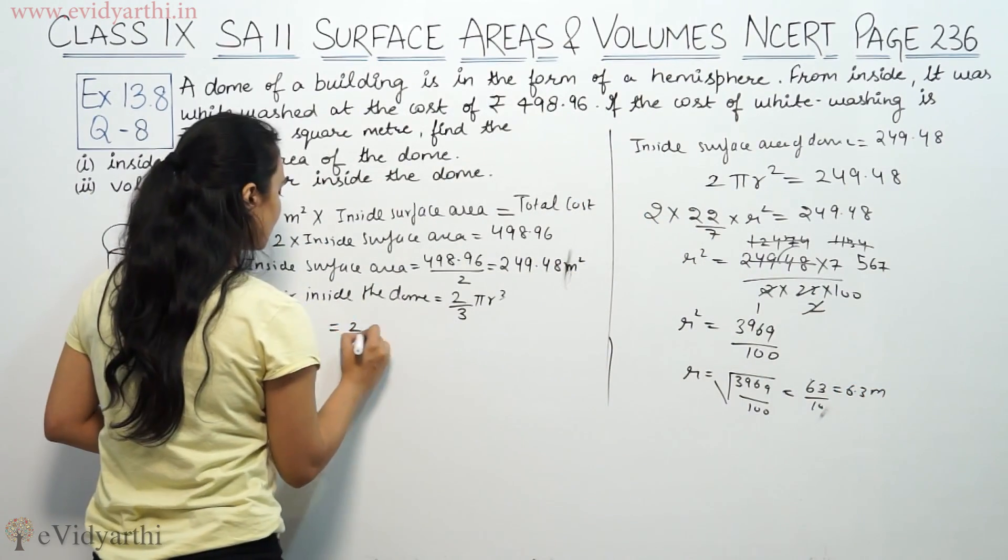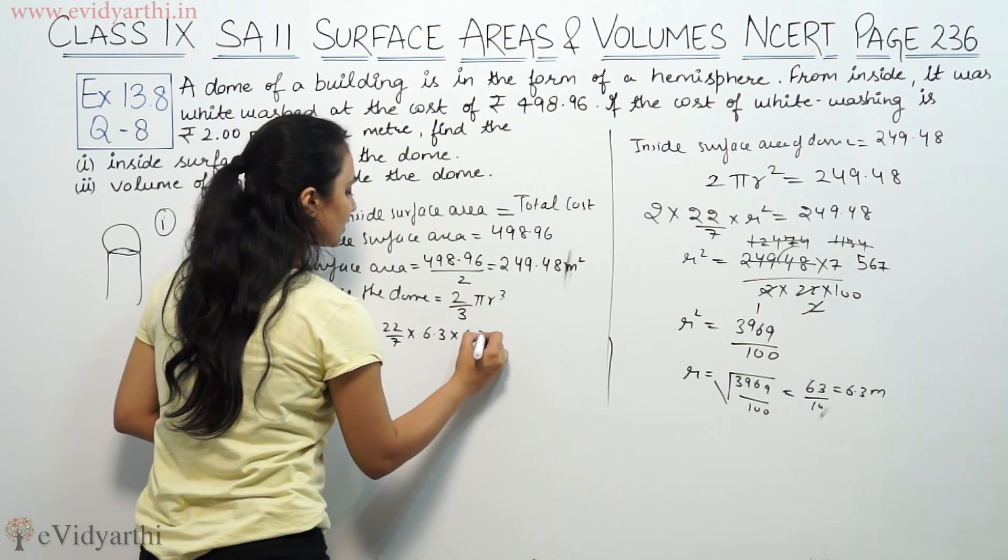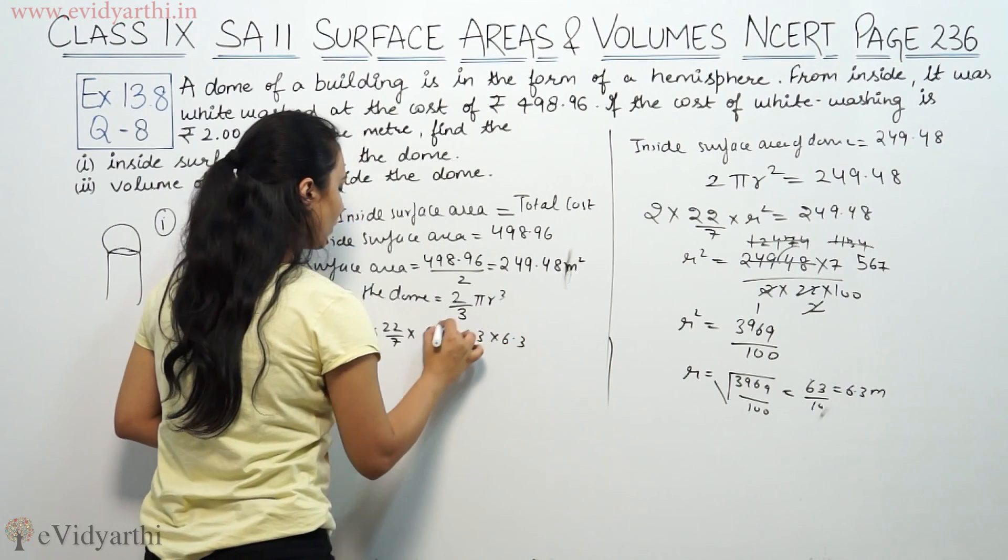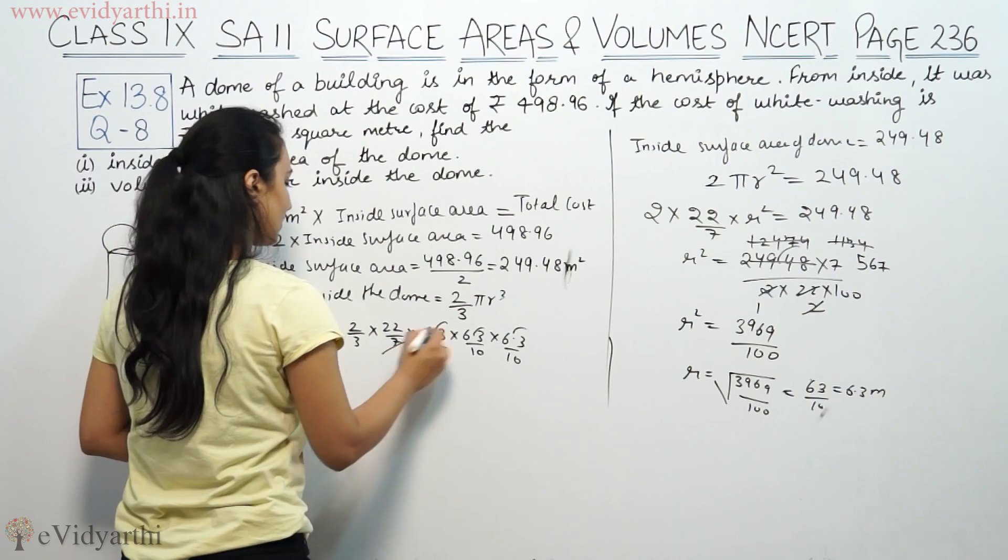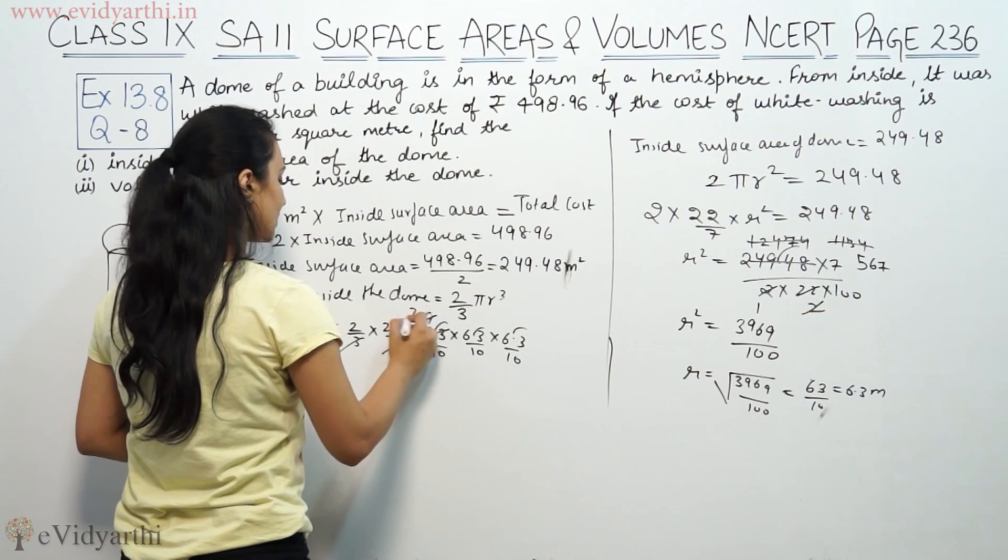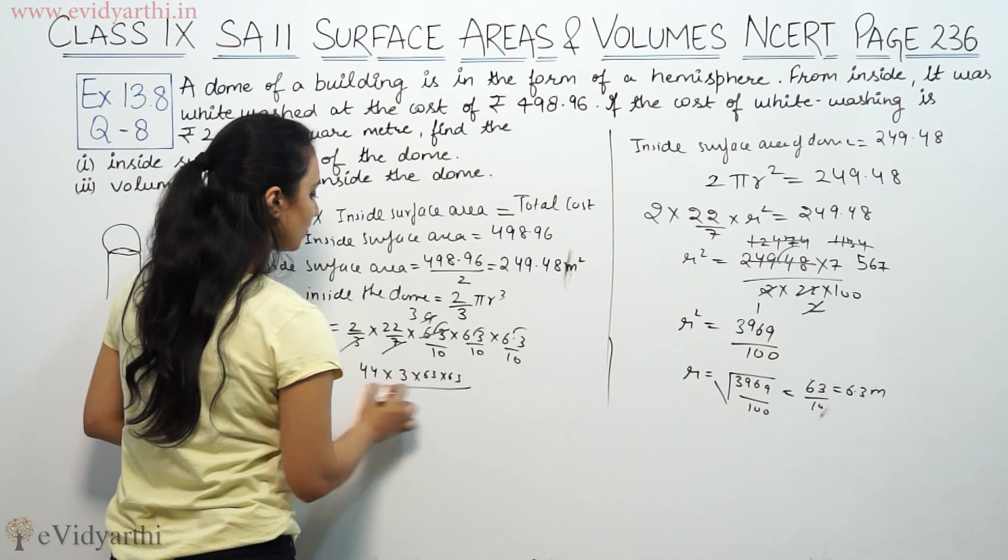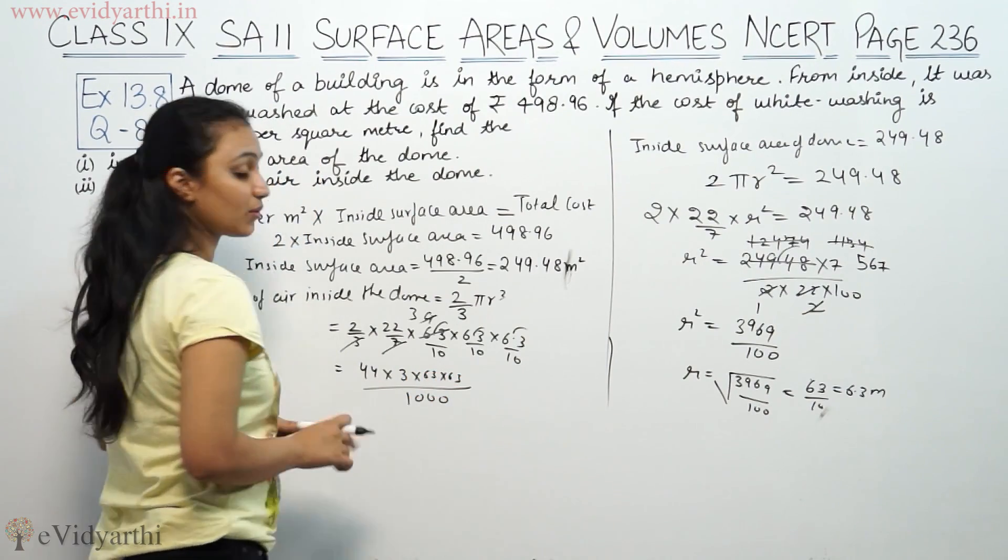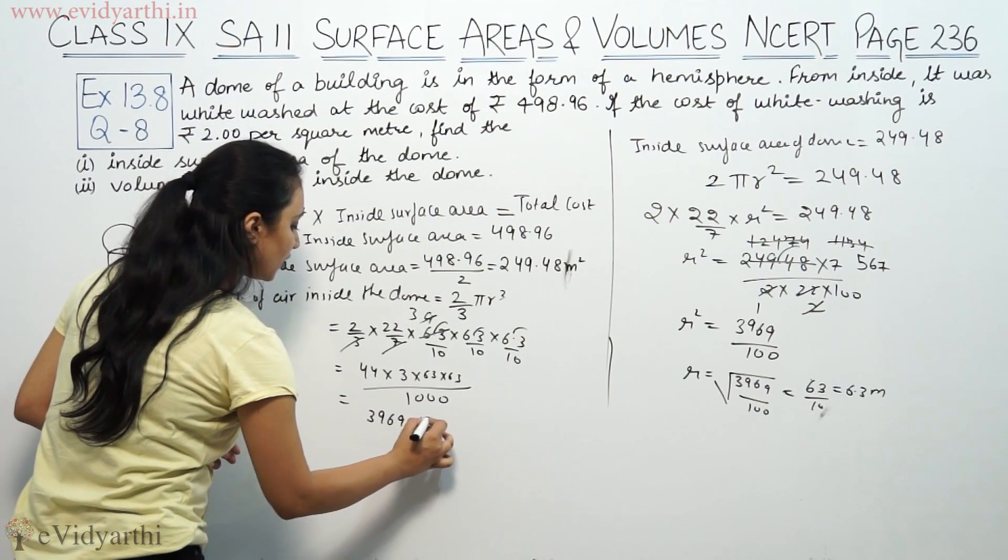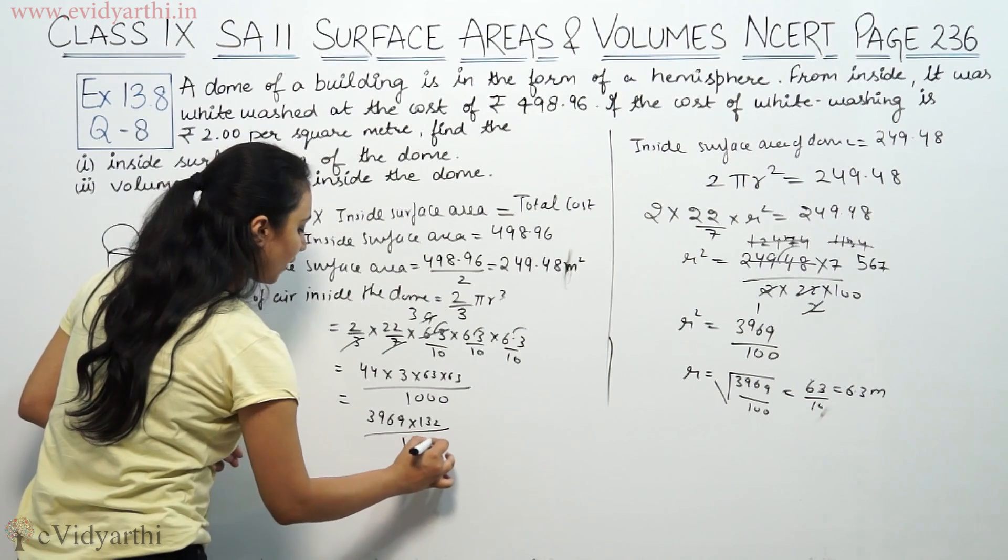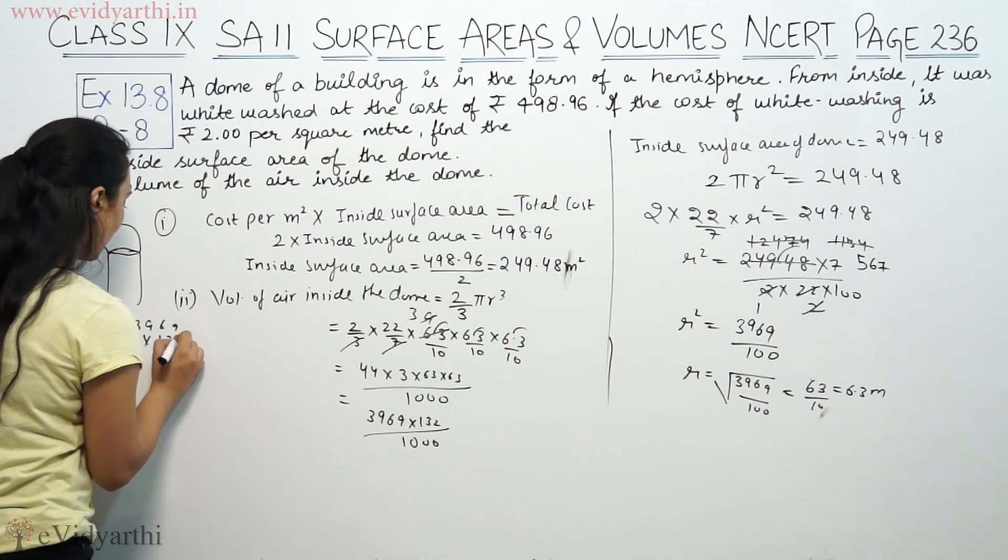So volume is 2/3 × 22/7 × 6.3 × 6.3 × 6.3. We get 3969 and 44 × 3 is 132.